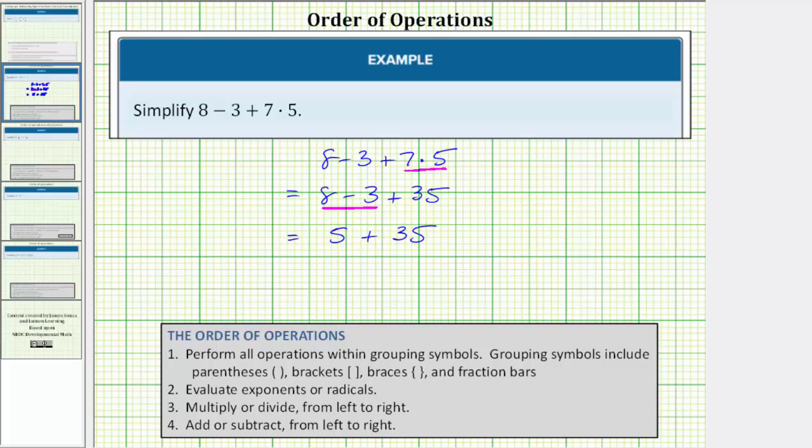Of course, the last step here is to find this sum. 5 + 35 = 40. So the given expression simplifies to 40. I hope you found this helpful.